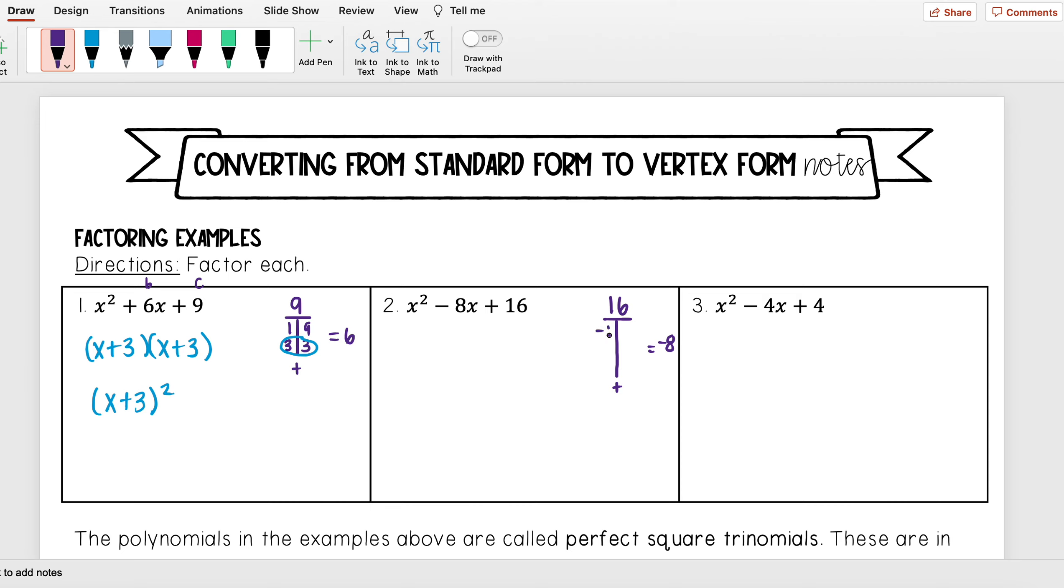So since they're multiplying to a positive 16 and adding to equal a negative number, that means that both of my factors need to be negative. So I have negative 1, negative 16, negative 2, negative 8, and negative 4, negative 4.